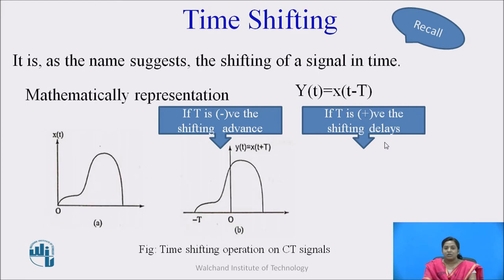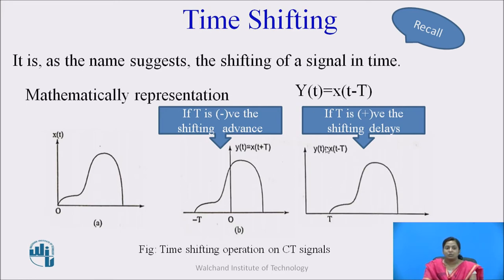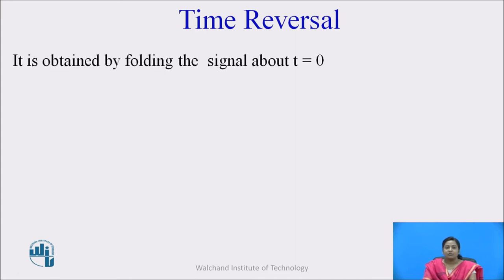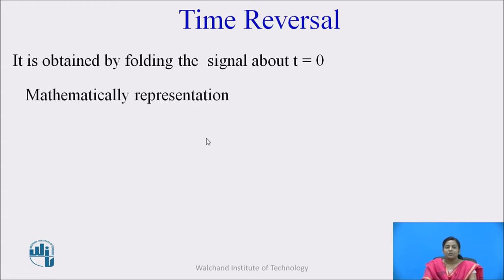This is the time shifting property. The second is the time reversal property. The time reversal of the signal is obtained by folding the signal about t = 0. Mathematically it is represented as y(t) = x(-t). If x(t) is the input, then the time reversal version of that signal is y(t) = x(-t).